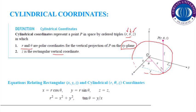The rectangular coordinate system and the cylindrical coordinate system are not the same. R and theta are converted from rectangular to polar coordinates using the relations x equal to R cos theta and y equal to R sin theta.